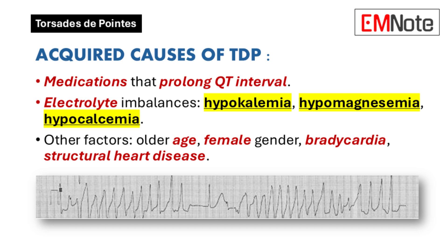Electrolyte imbalances such as hypokalemia, hypomagnesemia, and hypocalcemia are additional contributing factors. Other risk factors include older age, female gender, bradycardia, structural heart disease, diuretic use, diarrhea, malnutrition, and chronic alcohol use.